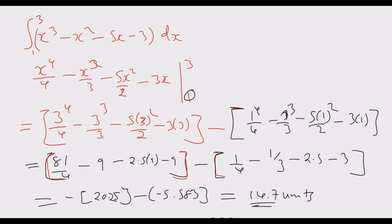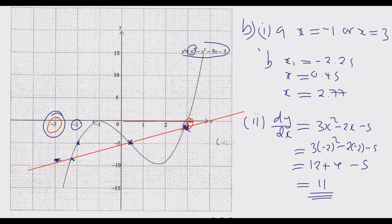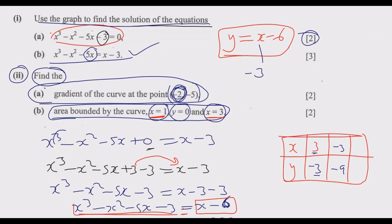So 14.7 units to 3 significant figures, which is approximately the 15 we estimated. This is how you answer this question using two methods: either estimate using the graph to get these two marks, or use integration to find the exact answer.